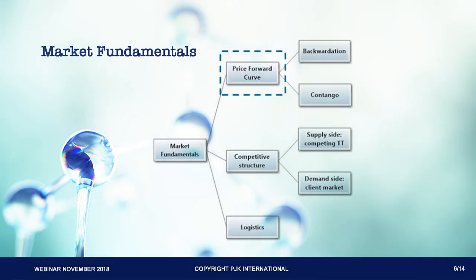The shape of the forward curve is determined on all futures markets. The oil price forward curve can be upward sloping — contango — or downward sloping — backwardation. Demand and tank availability are affected by the shape of the curve, and this influences commercial performance.